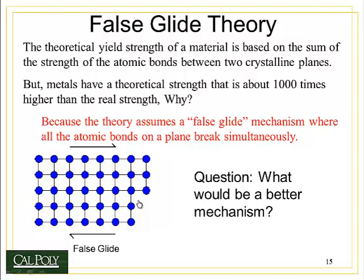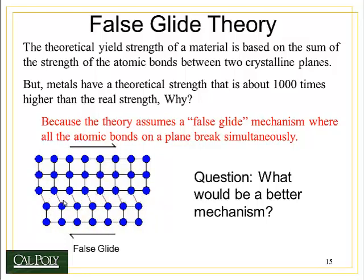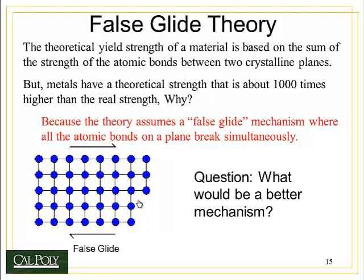Number one, if I have to break all the bonds simultaneously, that would require an enormous amount of energy. In fact, it requires so much energy that the theoretical prediction said that metals should be about a thousand times stronger than they really are — so that couldn't make any sense. And secondly, if I break all the bonds along this plane at the same time, wouldn't I actually fracture the material and break it into two pieces? So false glide theory doesn't explain what happens in the real world. We need a better mechanism.